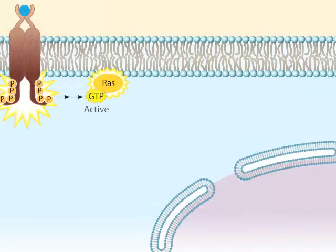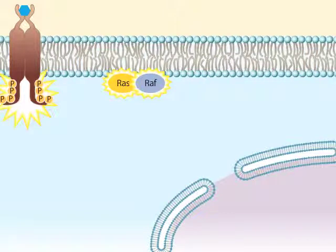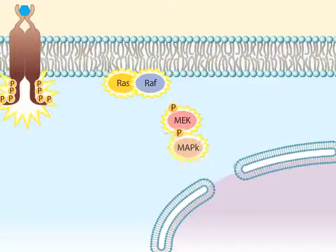Returning to the normal form of RAS — after it becomes activated, it activates a protein kinase called RAF. RAF is the first in a series of protein kinases that become sequentially activated. The protein kinase cascade continues when RAF phosphorylates and thereby activates MEK. MEK now phosphorylates and activates a protein kinase called MAP kinase.